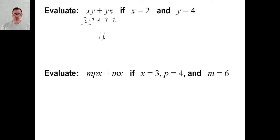Okay. Well, M, P, X. We're going to multiply all three of these things together. So M is 6. P is 4. X is 3. Plus M times X. That's going to be 6. X is 3. There we go.